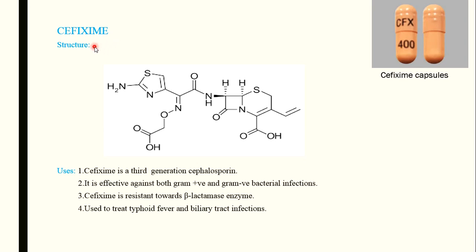The next structure is cefixime. About 90% of patients have been prescribed cefixime, which is a third generation cephalosporin, available in capsule form. The structure follows the general cephalosporin framework — the cepham core is present. At the third position there is a CH=CH₂ allyl group, and at the fourth position there is a carboxylic acid group. After the amide group, there is a side chain containing a thiazole ring.